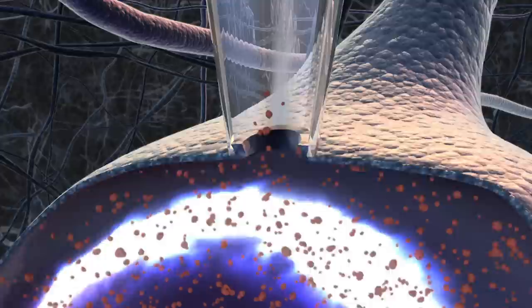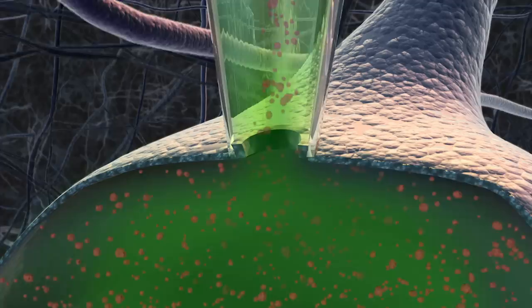You can also use it to fill the neuron with dye. So you can reveal the architecture of those neurons and then you can correlate the architecture, the structure, with the function.